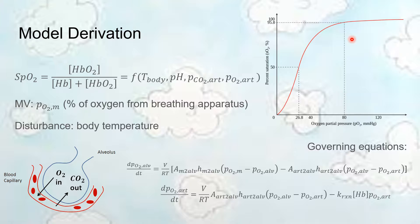So, with the controller, we're essentially changing the partial pressure of oxygen coming in from the machine. With some disturbances of the body temperature, let's say the baby gets a fever or something, how would the controller handle that?